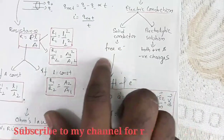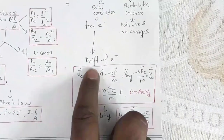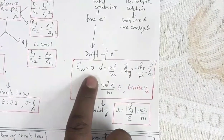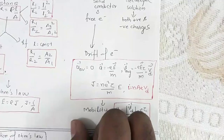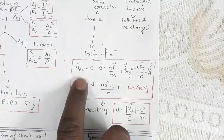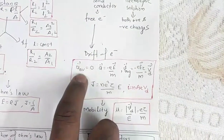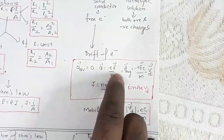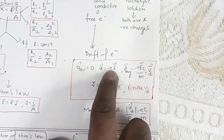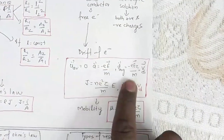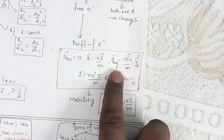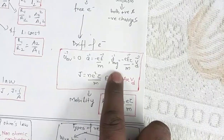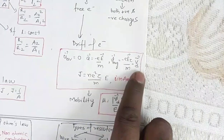In solid conductors, conduction is through free electrons, so next is drift velocity of free electrons. Initially, the average velocity U_avg is zero — when there is no applied potential, electrons are in random motion. On application of potential, there is an electric field, so acceleration = F/m = QE/m, where Q = -e for an electron. The final average velocity on application of potential is given by v_d = -eEτ/m, and this is called the drift velocity.